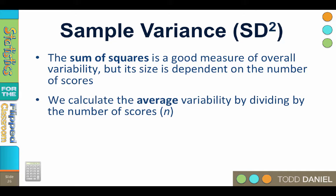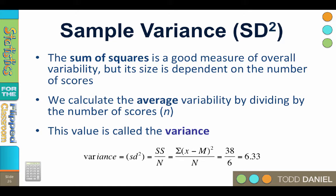Therefore, we should standardize this measure and calculate the average variability by dividing the sum of squares by the number of scores, or n. This average sum of squares value is called the variance. Variance is sometimes abbreviated as VAR, but more commonly as SD squared, for reasons that will become apparent when we talk about the standard deviation.